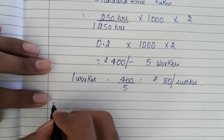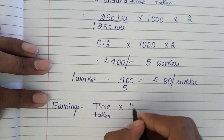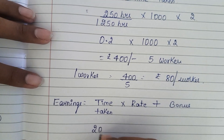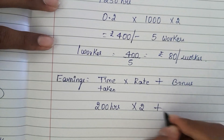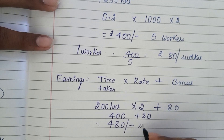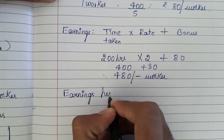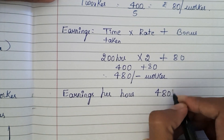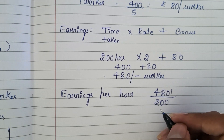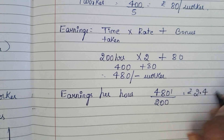Now let us calculate earnings under Rowan plan: time taken × rate + bonus = 200 × 2 + 80 = ₹480 per worker. Earnings per hour = 480 ÷ 200 = ₹2.40 per hour.